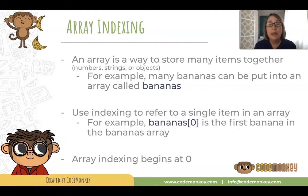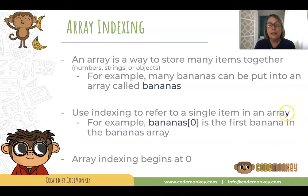For example, many bananas can be put into an array called bananas. Use indexing to refer to a single item in an array. For example, bananas square bracket zero — which we could say bananas with the index of zero — is the first banana in the bananas array.